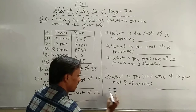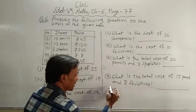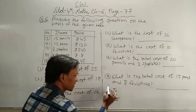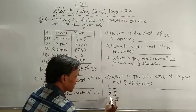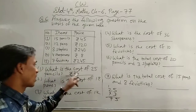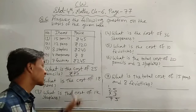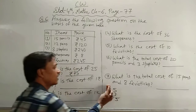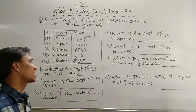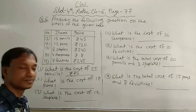जैसे 25 × 3: 3 fives are 15, carry 1, 3 twos are 6, plus carry 1 = 7. तो 75 आ गया। तो answer में 75 और rupees का symbol लिखो, क्योंकि cost पूछा।